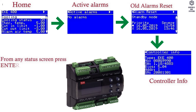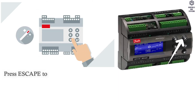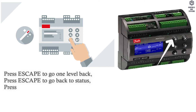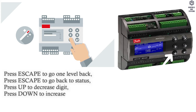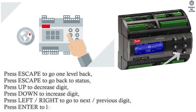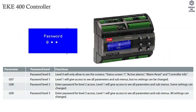From any status screen, press Enter for 2 seconds to access the main menu. Press Escape to go one level back, or press Escape again to go back to status. Press Up to decrease a digit, press Down to increase a digit, press Left or Right to go to the next or previous digit, and press Enter to login.